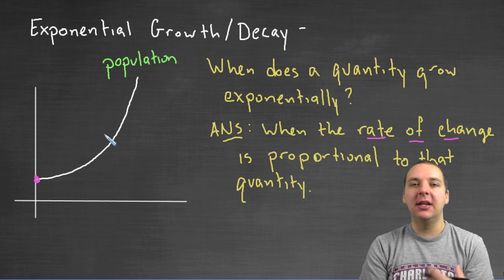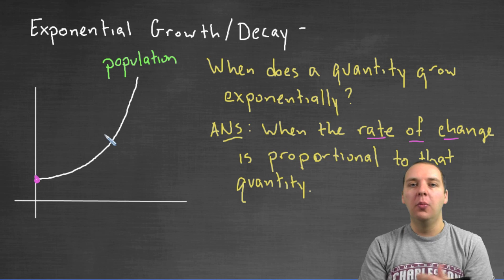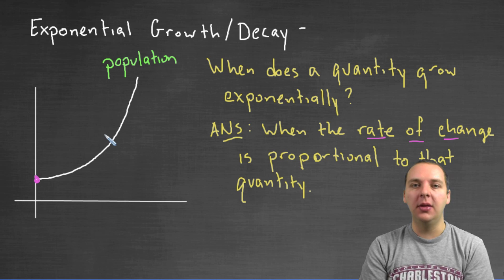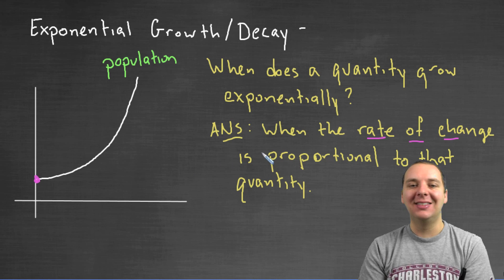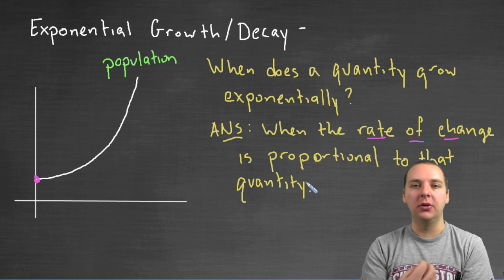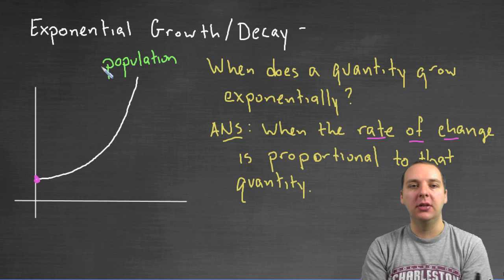You would say clearly that there would be more babies born every day in a large city versus some rural city. Well, why? It's because there's more people in a large city to have babies than would be childbearing people in a rural city. So when the size of the population influences the rate of change of the population, that's when you're getting exponential growth.